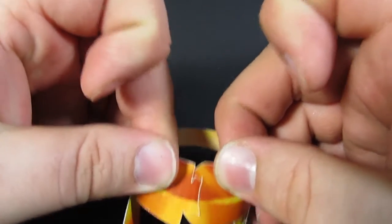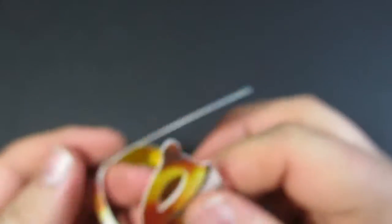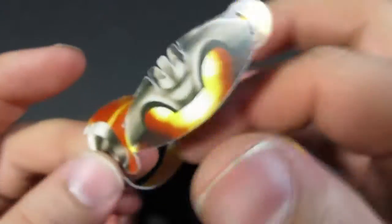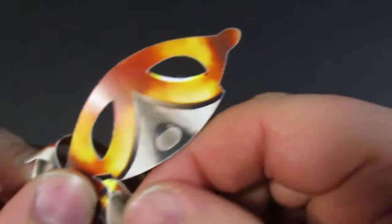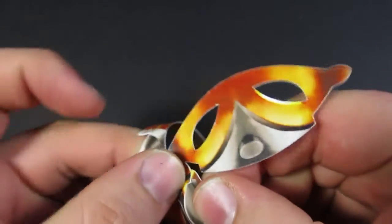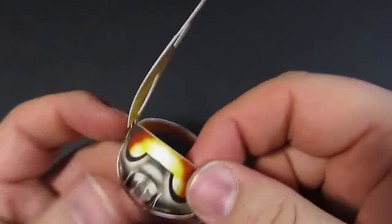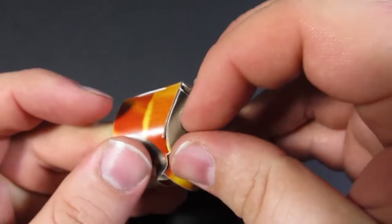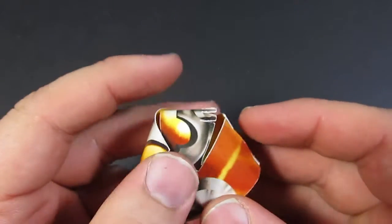To assemble the head, first take it and do the front and back tab and slot. Again, notice the directional tab. Just lock it in there. And then the back of the head goes first. There is a tab here and a slot on this piece. Insert. And then a tab here and a slot on this piece. There we go. We have the basic head.